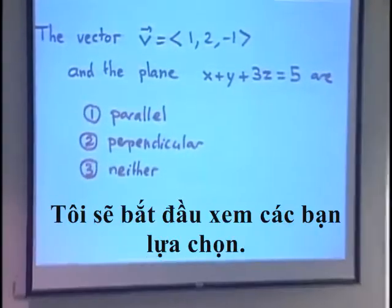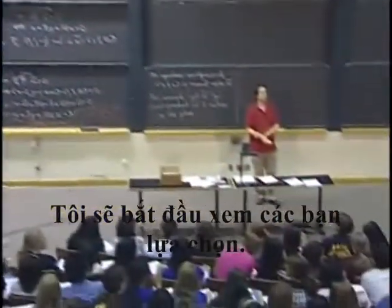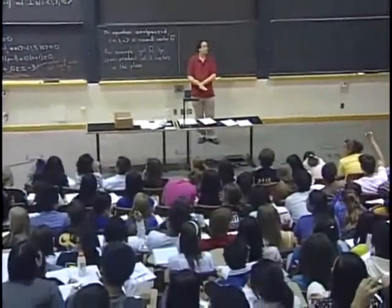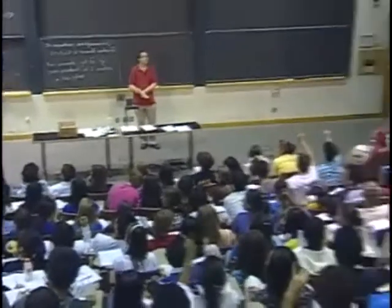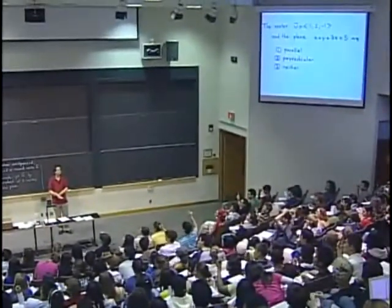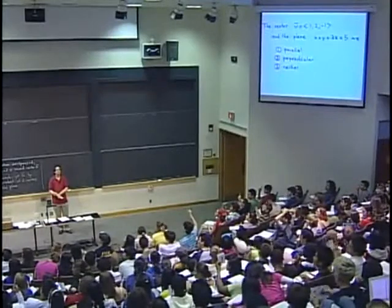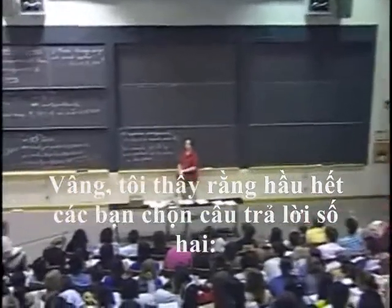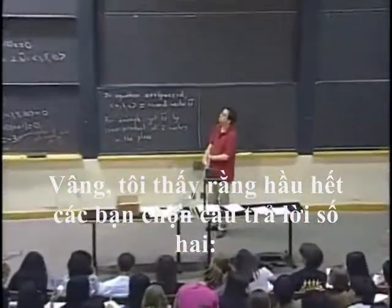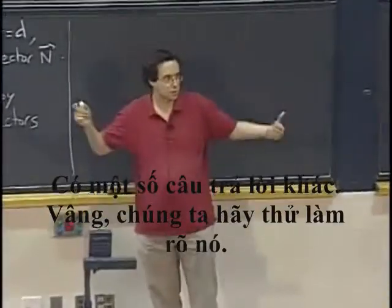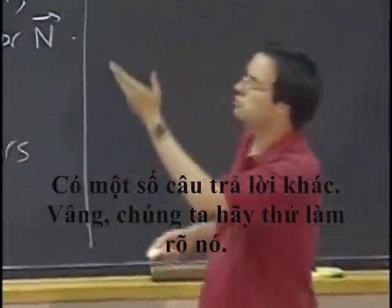Neither. OK, I am starting to see a few votes. OK, so I see a few votes. You can see that most of you are answering number 2. This vector is perpendicular to the plane. There are some other answers, too. Well, let's try to figure it out.